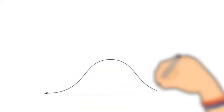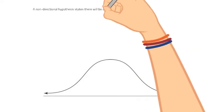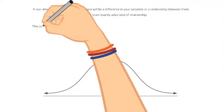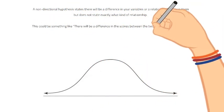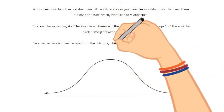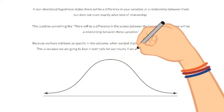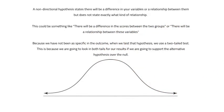A non-directional hypothesis is not quite so sure about the outcome. It states there will be a difference in your variables or a relationship between them, but doesn't state exactly what kind. For example: there will be a difference in scores between the two groups, or there will be a relationship between these variables. Because we have not been as specific about the outcome, when we test that hypothesis we use a two-tailed test, looking in both tails for our results. If results appear in either tail, we can support that hypothesis over the null.